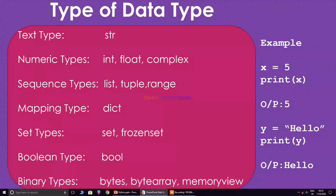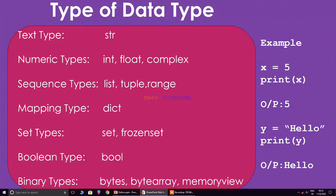In programming you often need to know if an expression is true or false. You can evaluate any expression in Python and get one of two answers: true or false. When you compare two values, Python returns the boolean answer — true or false. This is called the boolean data type.